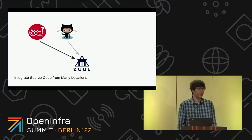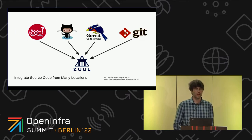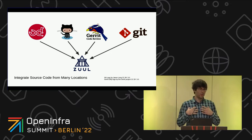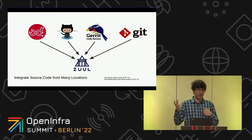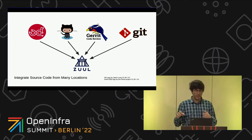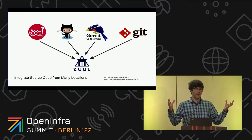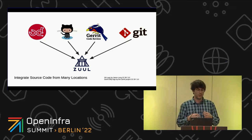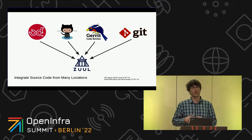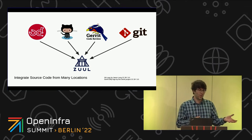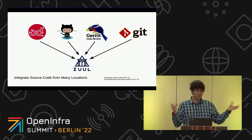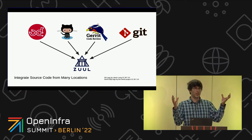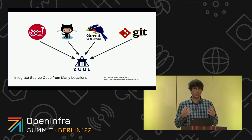Zuul can integrate source code from many locations. This is, I think, an underappreciated feature of Zuul. In our Zuul today, we talk to our OpenDev Gerrit, we talk to GitHub to get changes, we talk to Gerrit's Gerrit, and we talk to raw Git repos on the internet. Our Zuul is pulling in changes and events from all of those sources and able to take action on them — whether that's running a CI check, building container images, or eventually deploying to production — combining them all in a way that makes sense for our deployment.